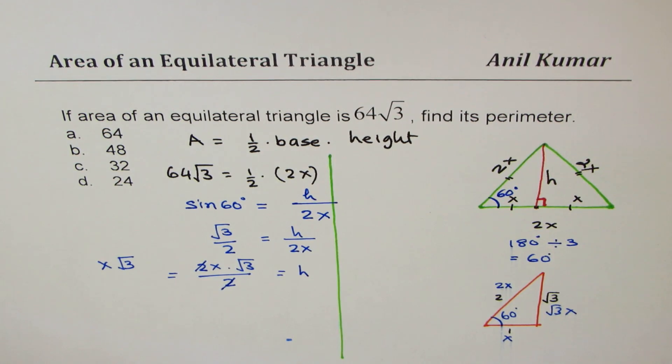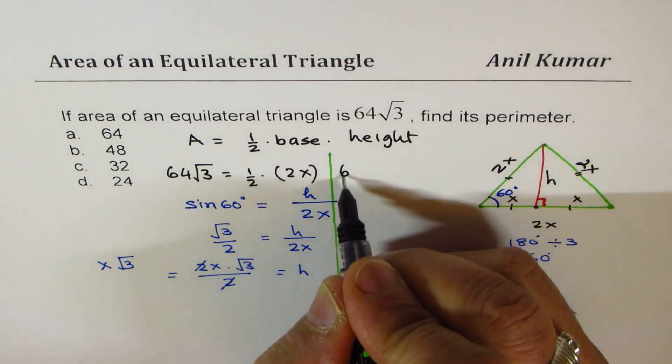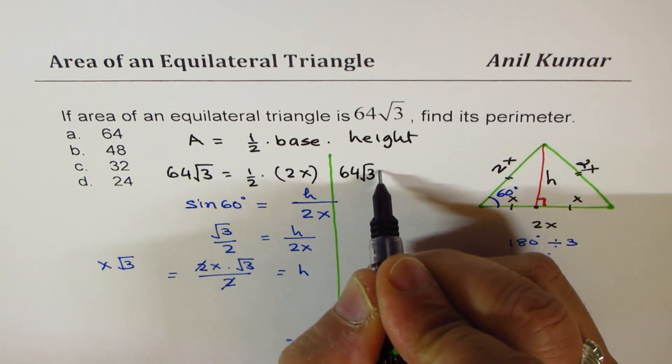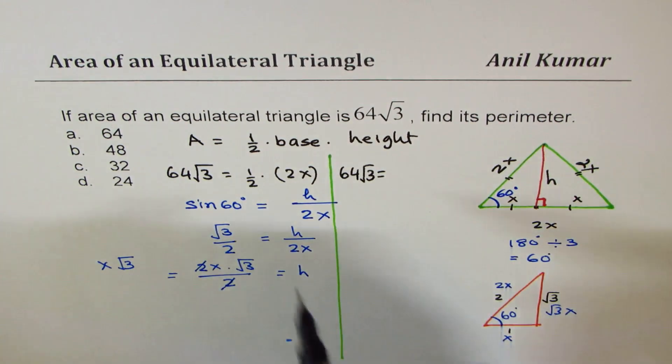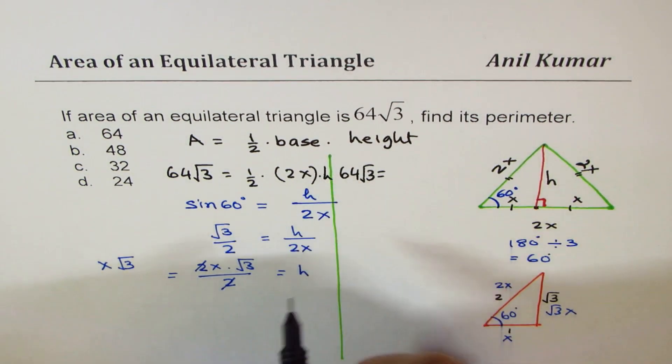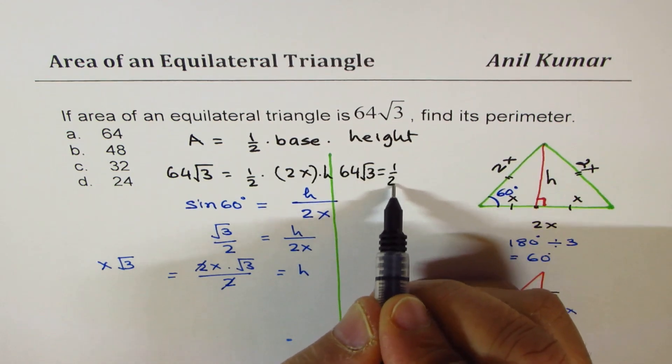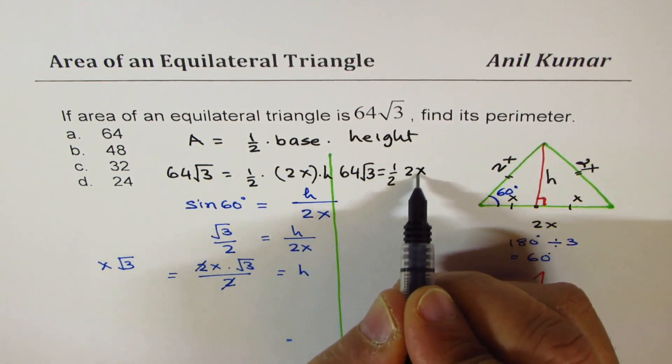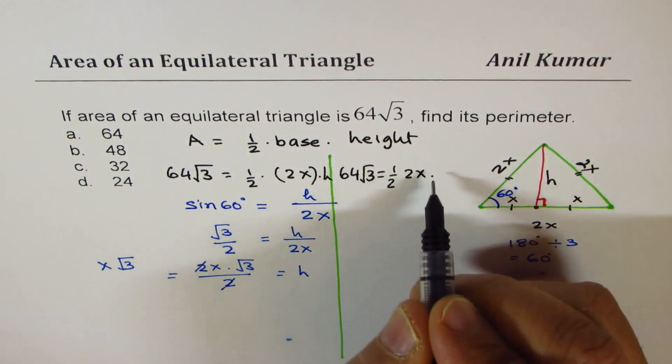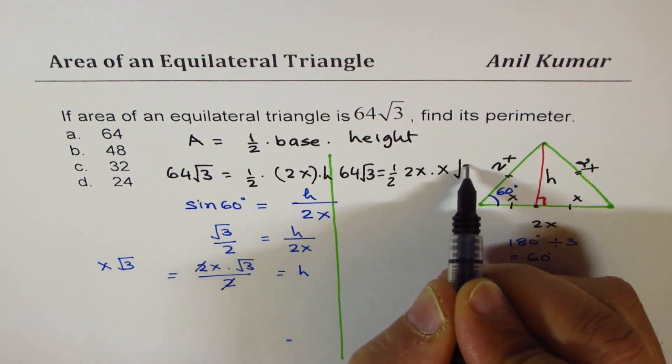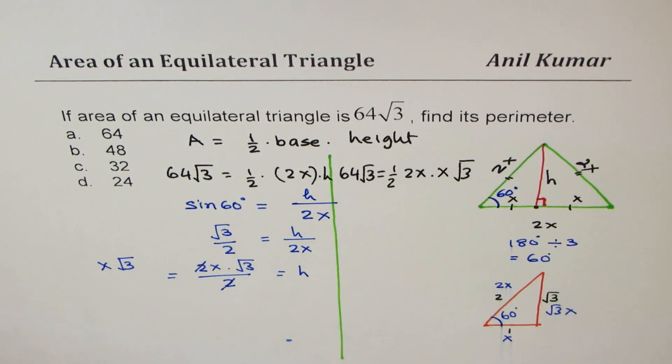We know that 64 square root 3 is equal to, we have to still multiply this by height. So half of 2x, which is the base, times the height, which is x square root 3. Now if you simplify, you could cancel these 2s and the square root 3 also.